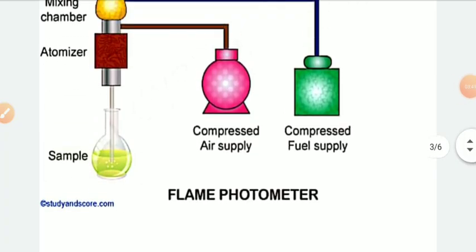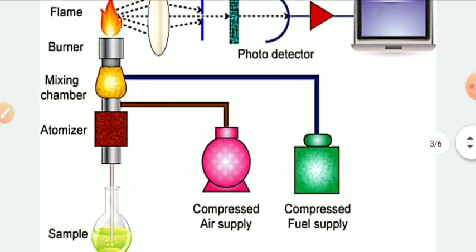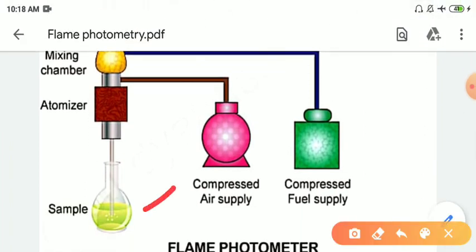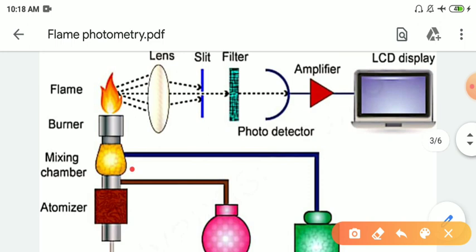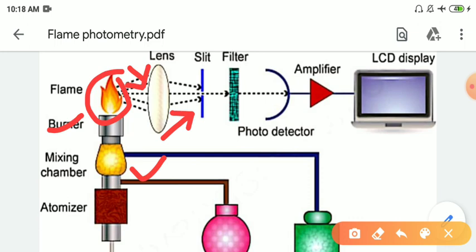This is the flame photometer instrumentation. The sample is connected to an atomizer, then we have a mixing chamber connected to a burner. The flame emits radiation which is collected by a lens, focused on a slit, and then passes through a filter. After that, the radiation goes to a photo detector and then to an amplifier. The photo detector generates an electrical signal which the amplifier enhances.